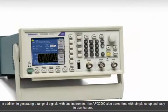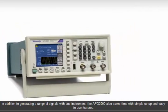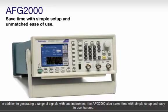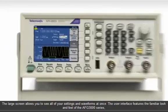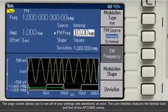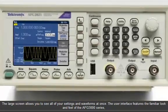In addition to generating a range of signals with one instrument, the AFG-2000 also saves time with simple setup and easy-to-use features. The large screen allows you to see all of your settings and waveforms at once.